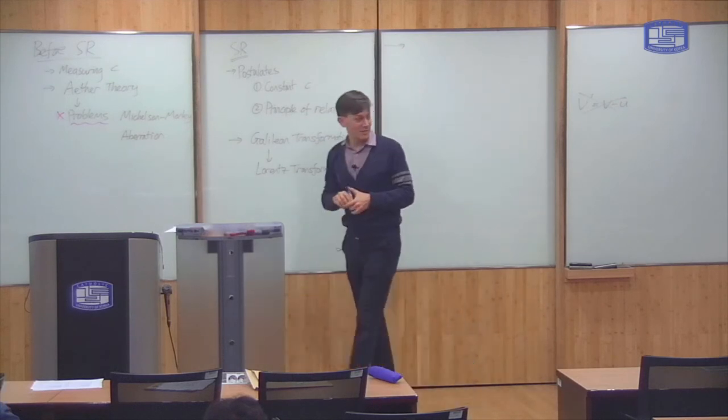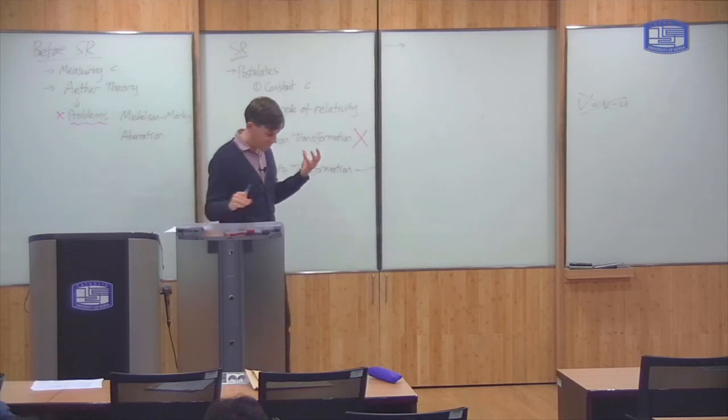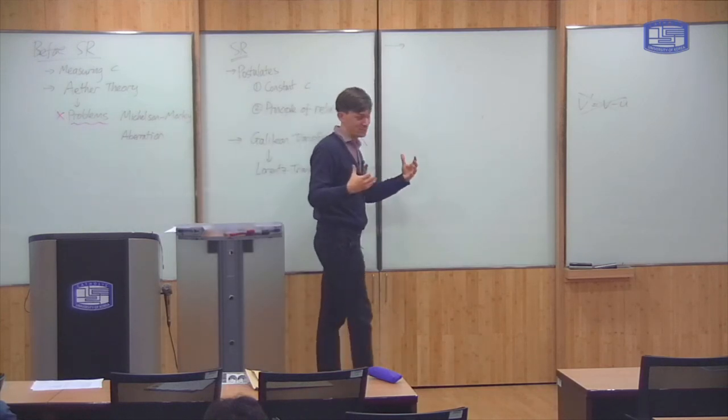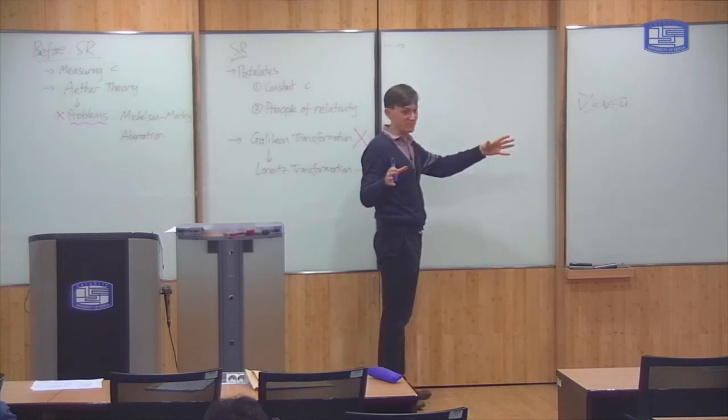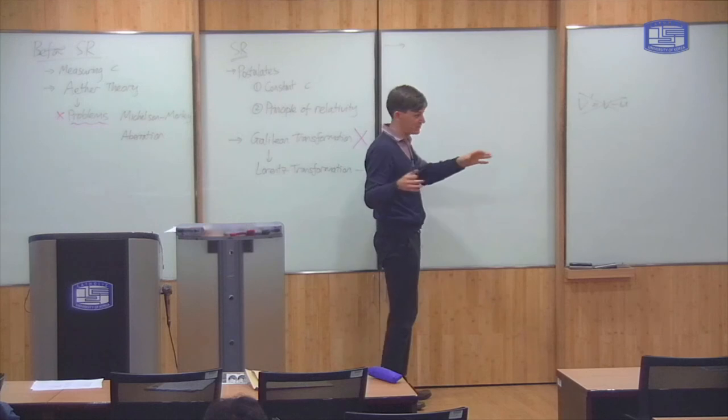The Lorentz transformation has some consequences for the way we measure space and time. And in particular, measurements of space intervals and time intervals are no longer absolute. Different observers have different ideas of length and time. And we summarize these into three effects.